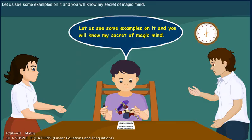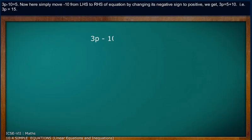Let us see some examples. 3p minus 10 equals 5. Now here, simply move minus 10 from left-hand side to right-hand side by changing its negative sign to positive. We get 3p equals 5 plus 10.